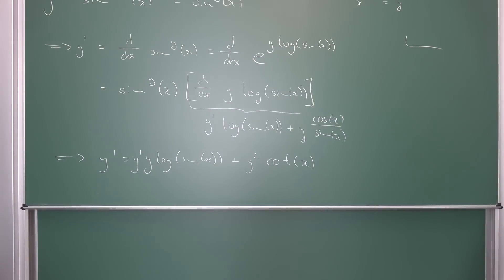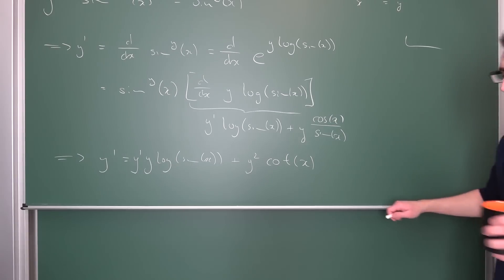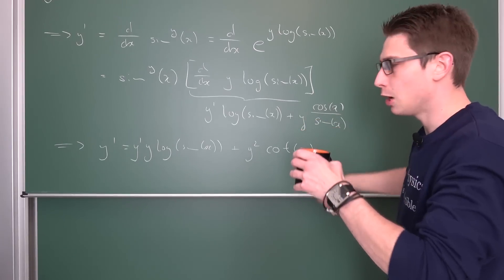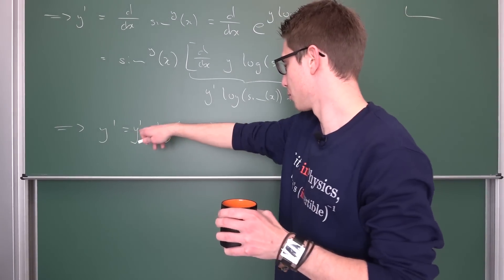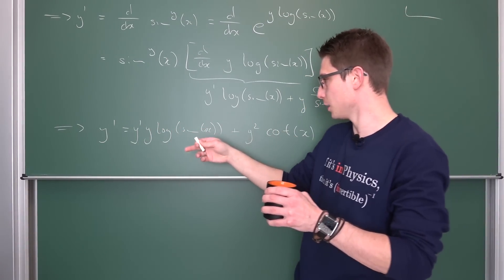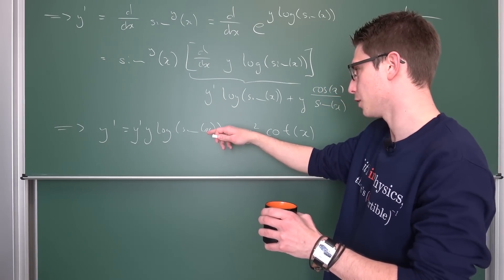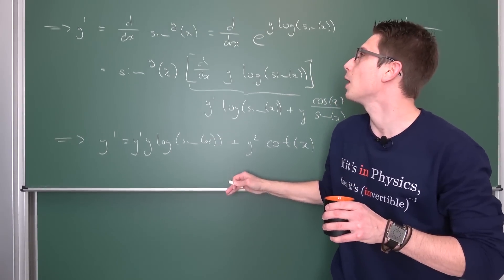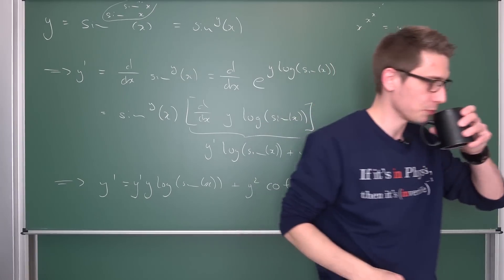Yeah, and now we are basically done I suppose. That was really short, you didn't expect that. I hope you can see it. Subtracting this term on both sides, solving for y prime, this is where we want to get it. Dividing both sides by 1 minus y log sine of x, and then we are basically done and substituting our infinite power tower by y and then we should be done.